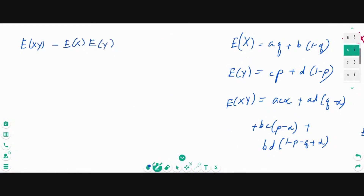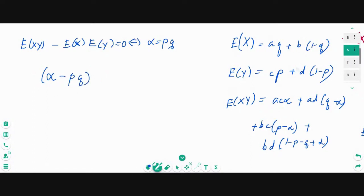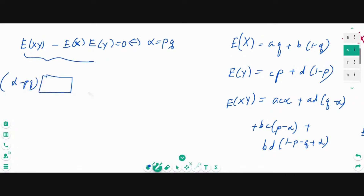Now let's find E[XY] minus E[X]·E[Y]. This is a very challenging task because there are a lot of variables. What we need to prove is that this equals zero if and only if alpha equals PQ. So we need to get the term (alpha minus PQ) as a common factor from all of this — we need to arrange the algebra to extract alpha minus PQ times something.